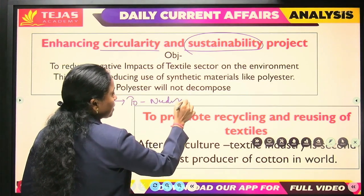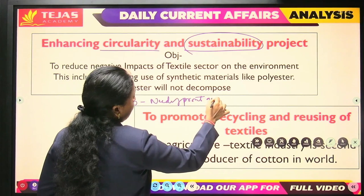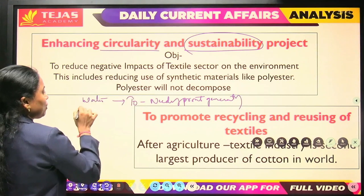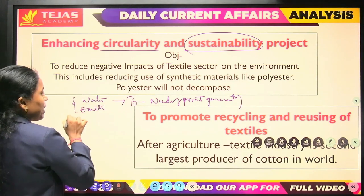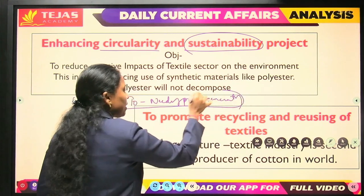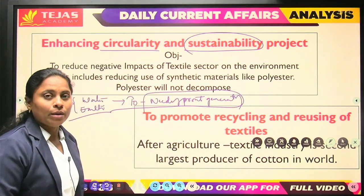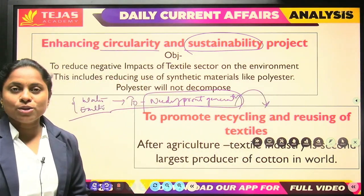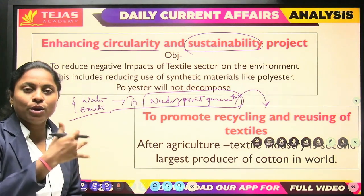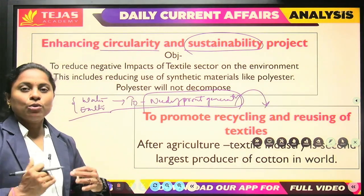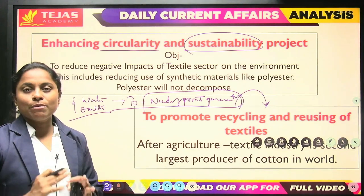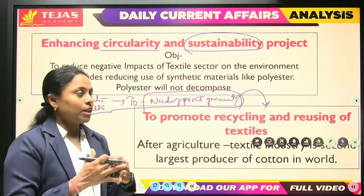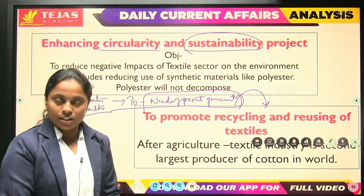The needs of the present generation should be fulfilled. Whether it could be water, earth, or whatever resources we have — they should not be exhausted only for the present generation. At the same time, those resources should also be saved for the future generation. We have to protect, conserve, and restore the natural resources and forward them to future generations.